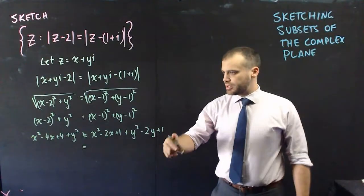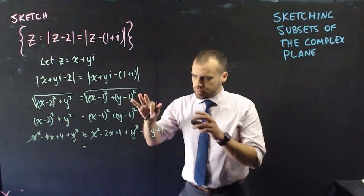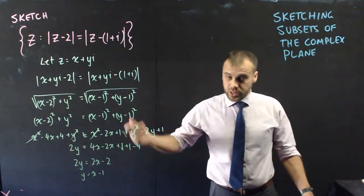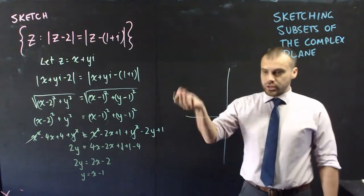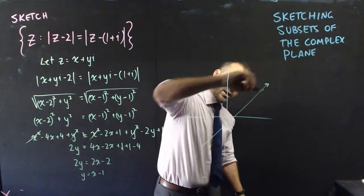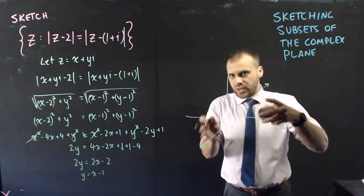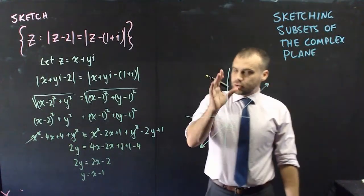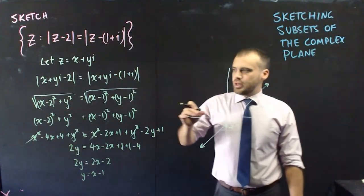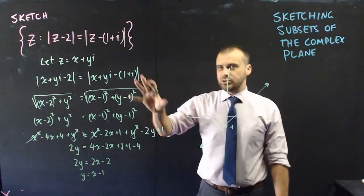Once expanded, we can cancel x² and y² from both sides and simplify. We eventually arrive at y = x − 1. On the Argand diagram, this is a straight line with gradient 1 and y-intercept −1. Points lying on that line are our answer. It starts off intimidating, but working through algebraically, no problems.